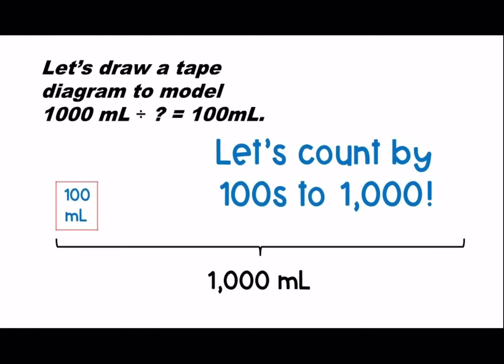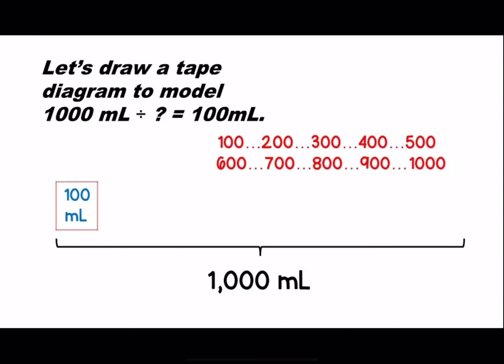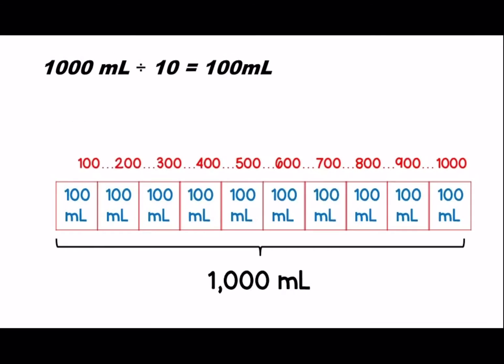We can count by 100 to 1,000 to find our answer. Ready? 100, 200, 300, 400, 500, 600, 700, 800, 900, 1,000. There are 10 100 milliliters in all to make 1,000 milliliters. We can say that 1,000 milliliters divided by 10 equals 100 milliliters.